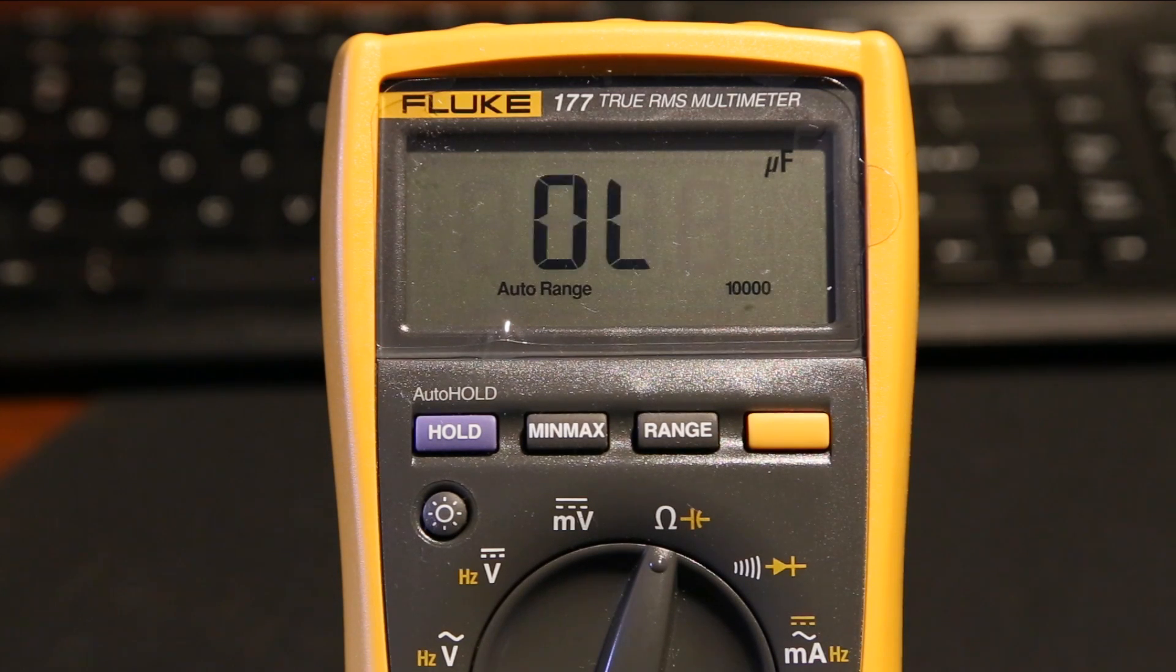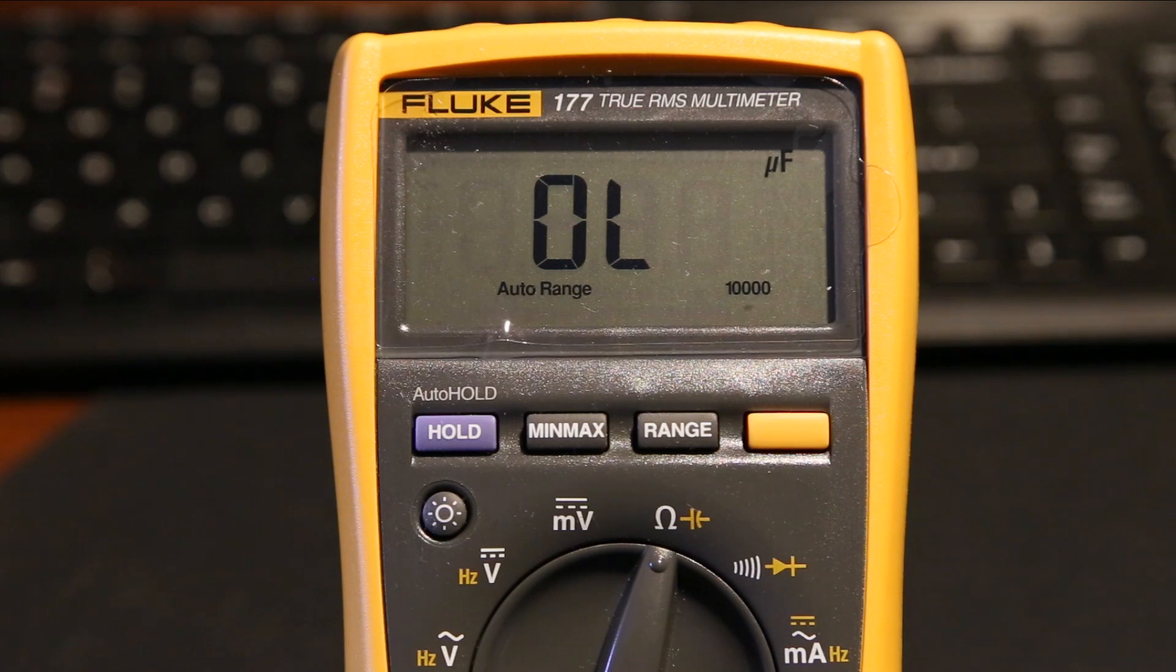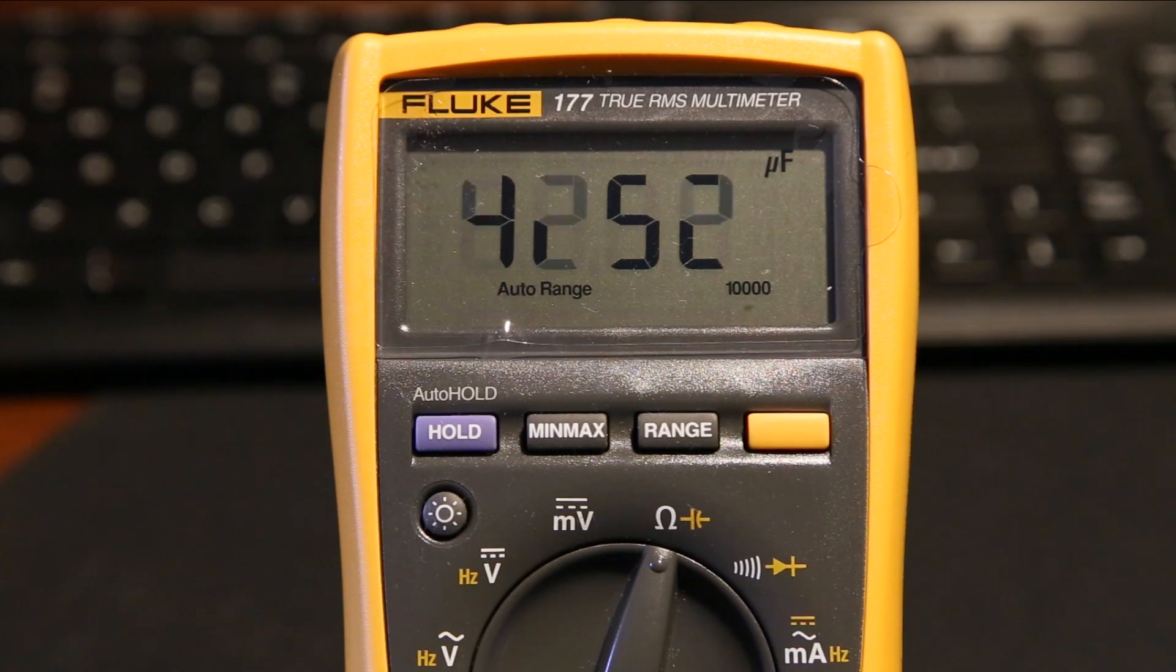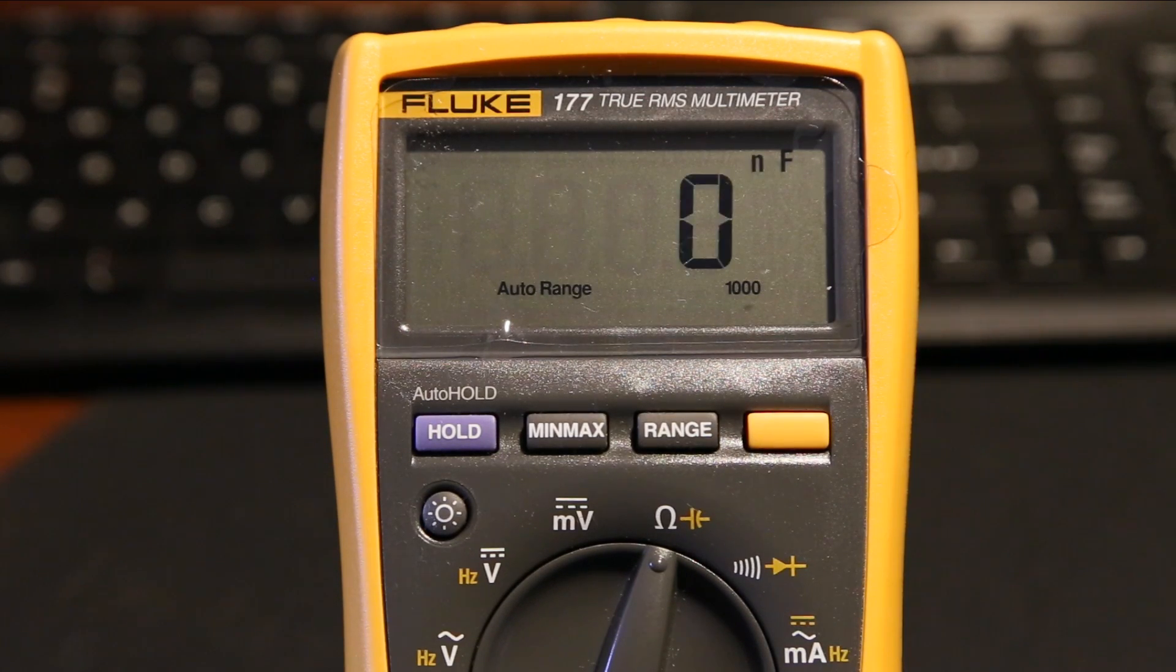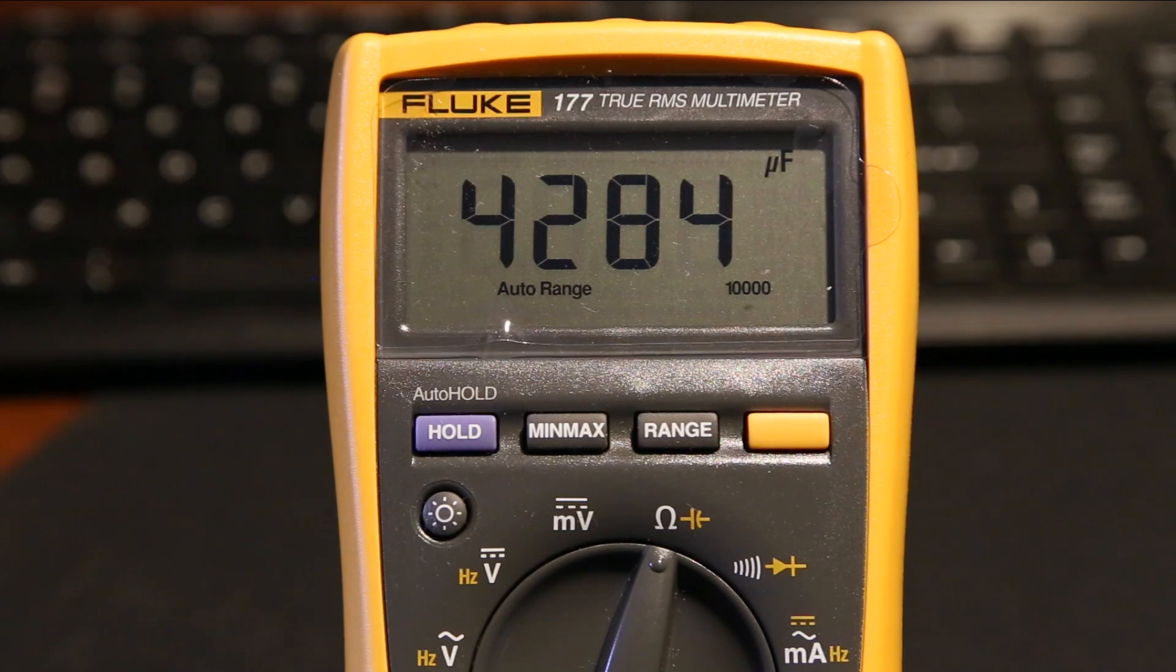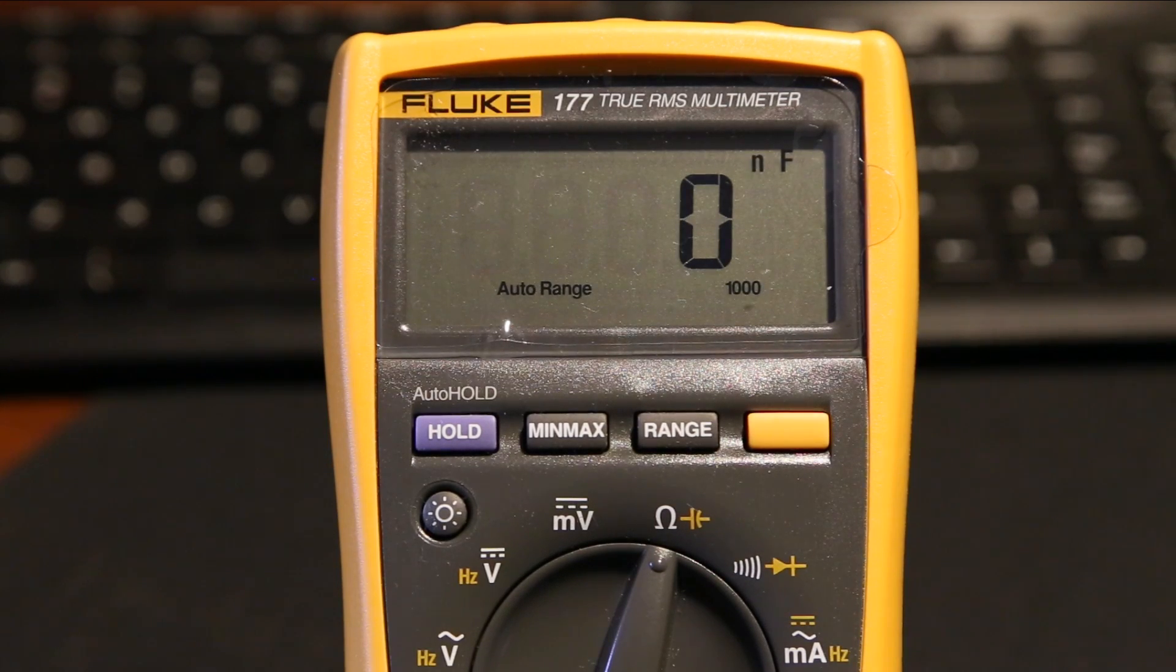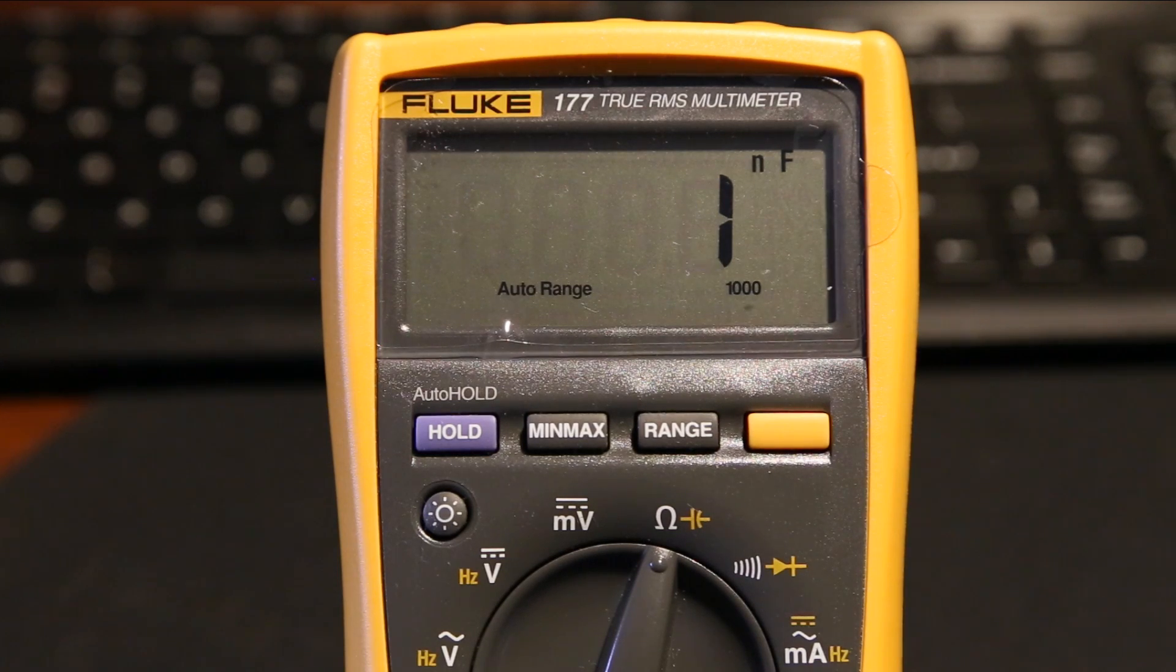How about a 4700 microfarad capacitor. Let's see how that stacks up on this meter. It might take a little bit longer to get a reading. What it showed there is discharge. There might still have been a bit of charge in that capacitor. I've just discharged it now. 4,284 microfarads. 4,700. That could be the capacitor starting to go bad. It is an older capacitor which I pulled from some electronics.